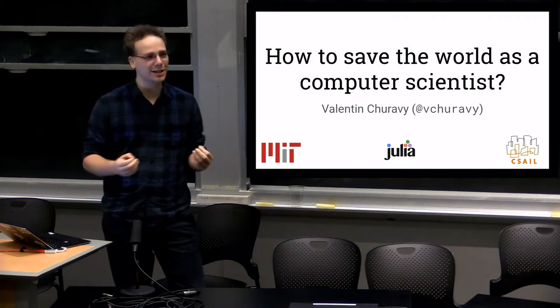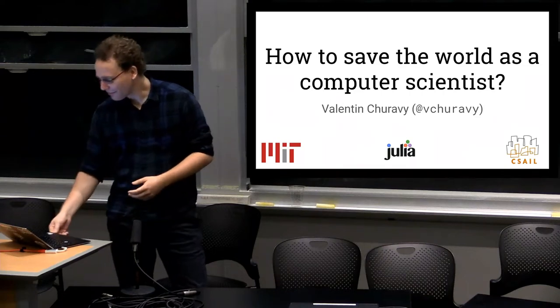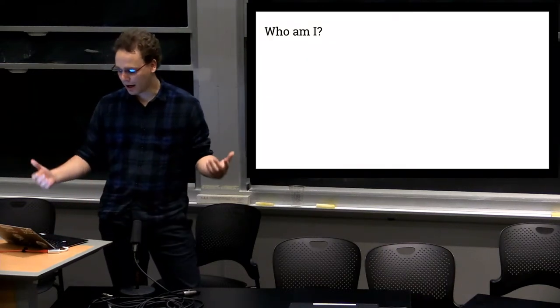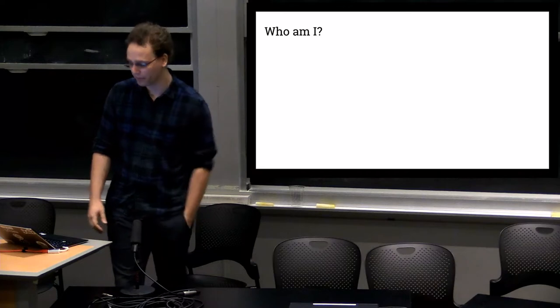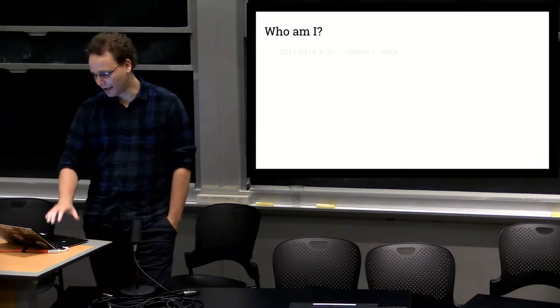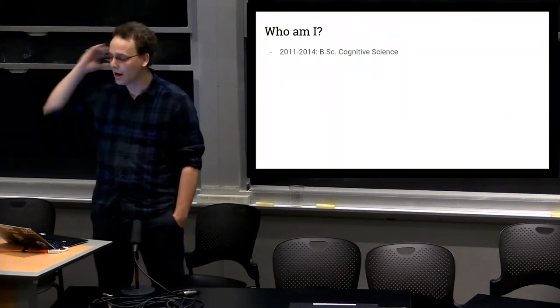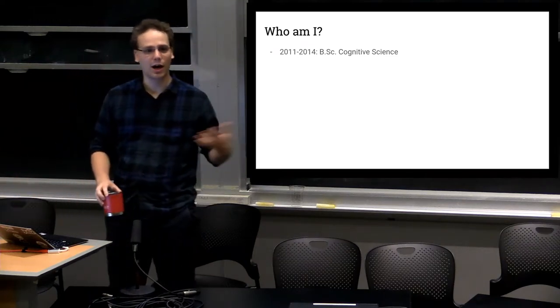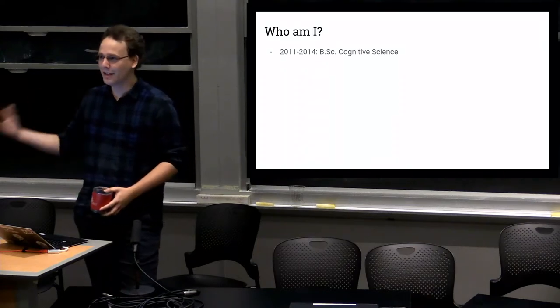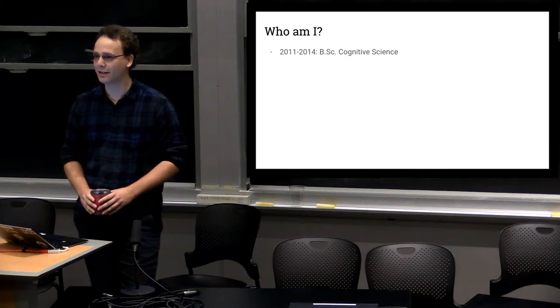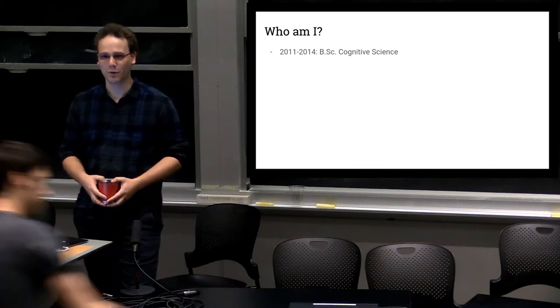I want to talk today about how to save the world as a computer scientist, which is a slightly sensationalist statement. But I am a PhD student here at MIT right now in CSA. I work on the programming language Julia. I didn't start out as a computer scientist. I started out originally studying in Germany, researching cognitive science. At the end of my bachelor's studies, I decided that I wanted to take my computational skills and apply them somewhere where I would enact positive change.